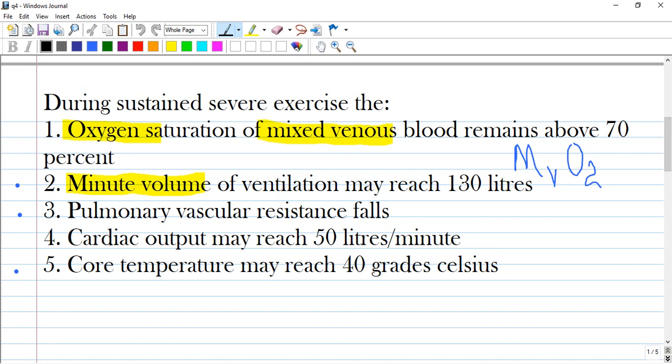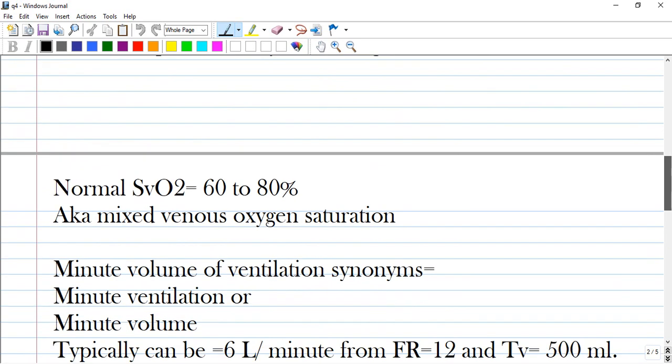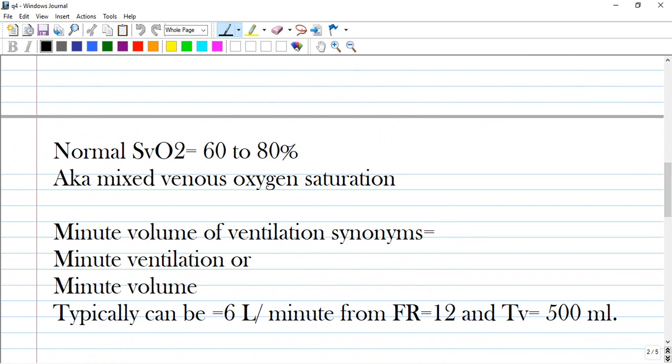Let's analyze every one of these. Oxygen saturation of mixed venous blood remains above 70% - this is wrong. During sustained or severe exercise, consumption of oxygen will be increased and of course saturation in the venous blood will be lower than normal, as normal ranges from 60 to 80%.